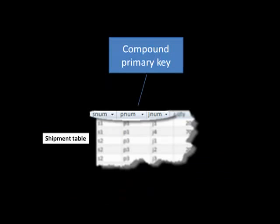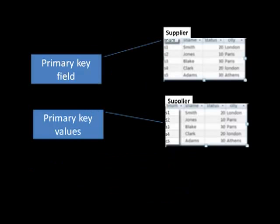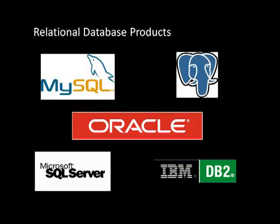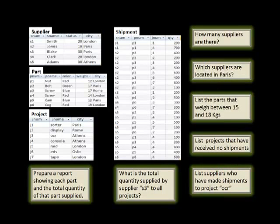Now, sometimes primary keys are compound — that is, a primary key need not always be made of just one field. It's possible that a primary key may be constructed out of many fields. For example, in the shipment table, you see supplier number, part number, project number, quantity. Now what is it that uniquely identifies a row? You can't say just supplier number because the same supplier number can occur many times.